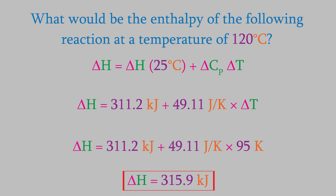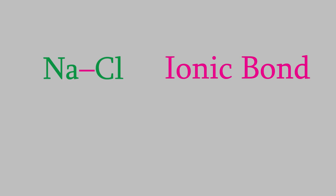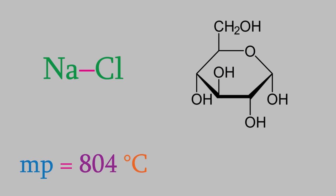But where does this change in enthalpy come from? The heat absorbed or released from a reaction often comes from the bonds in the compounds. Ionic bonds are much stronger than covalent bonds, and we can see that when we look at properties like melting point. For example, the melting point of sodium chloride is 804 degrees Celsius, but the melting point of glucose, which contains only covalent bonds, is much lower at 148 degrees Celsius. This is because ionic compounds are connected by strong ionic bonds.